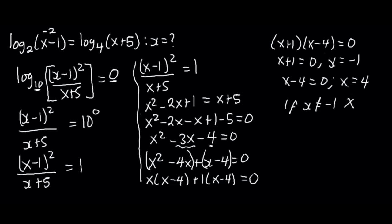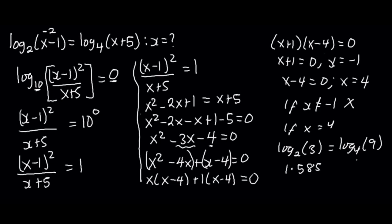Now let's test x equals 4. We get log to the base of 2 of 4 minus 1, which is log base 2 of 3, and log to the base of 4 of 4 plus 5, which is log base 4 of 9. From the calculator, both give us 1.585. Since x equals 4 satisfies the equation, the value of x is 4. Thank you for watching this video. Please don't forget to like, comment, and subscribe to this channel.